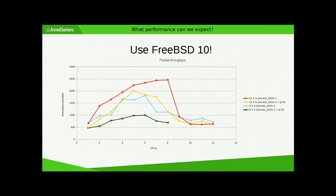Basically here I got about 2 million packets per second with PF enabled on what seemed to be five cores. You can get more performance if your network card supports multiple interrupts. This not only means you need FreeBSD 10 — it also means you have to have a proper network card, not like the Broadcom.